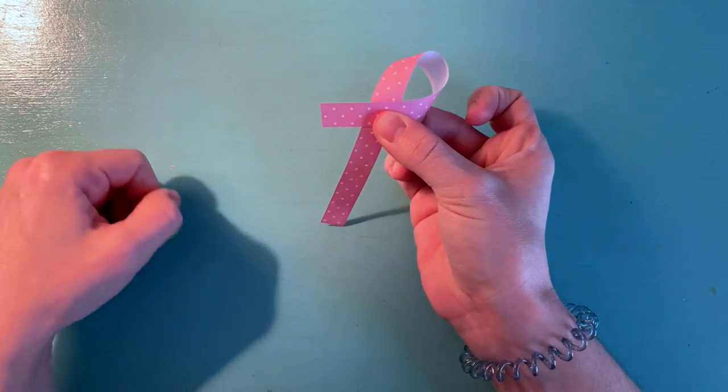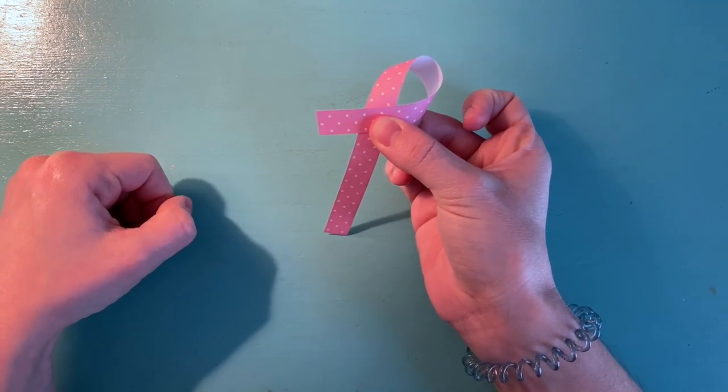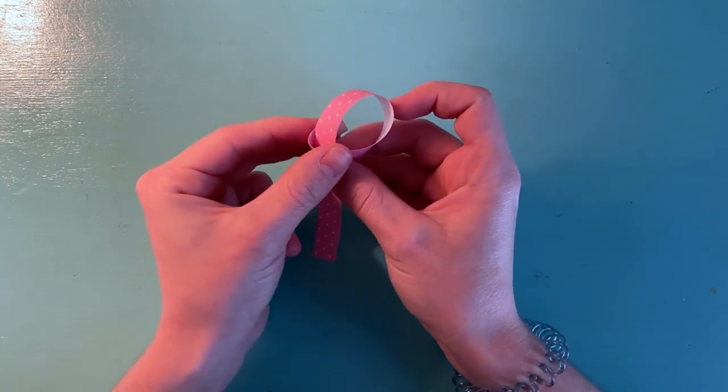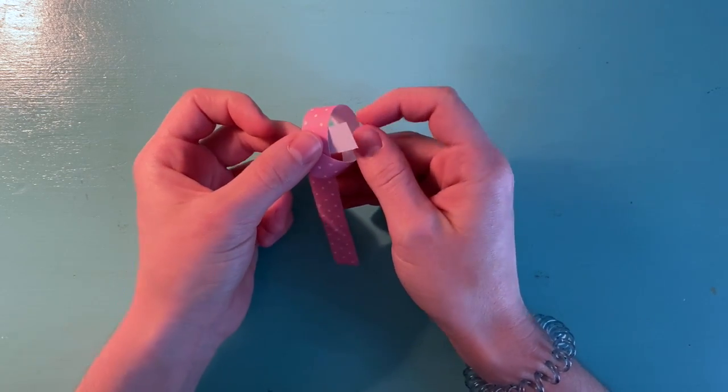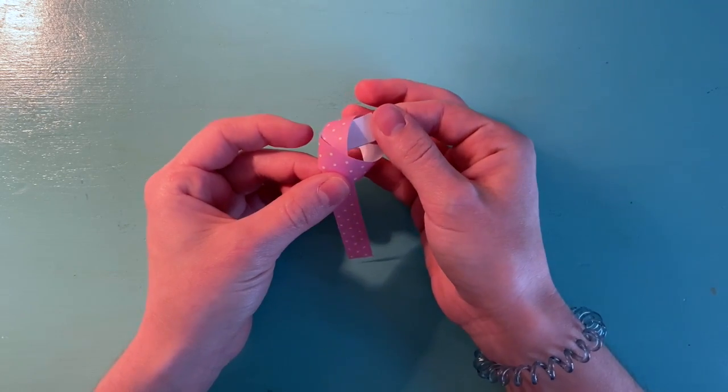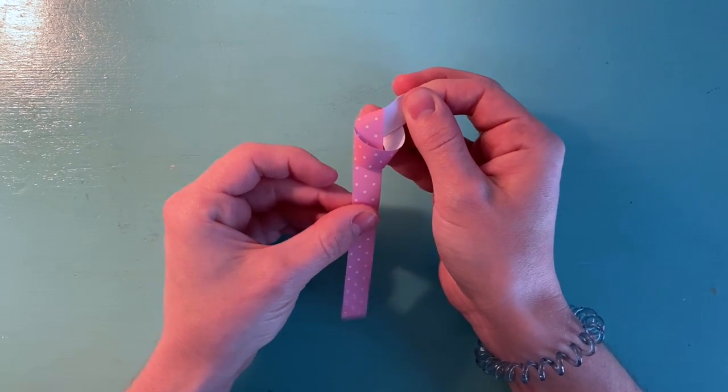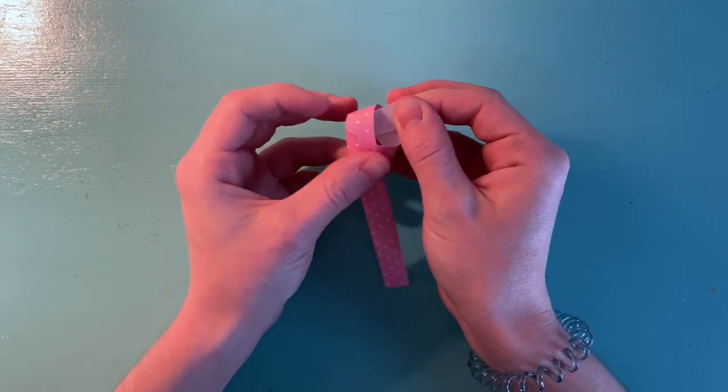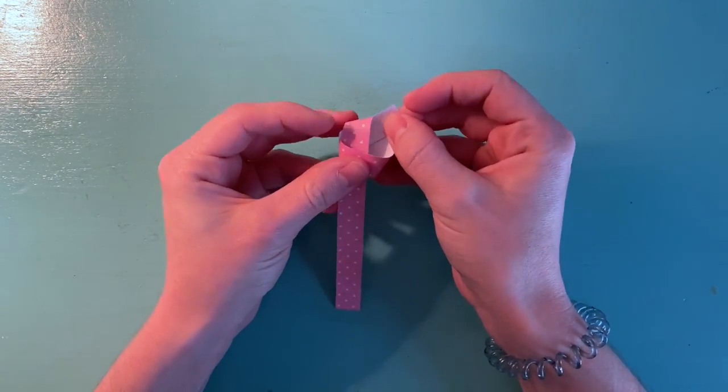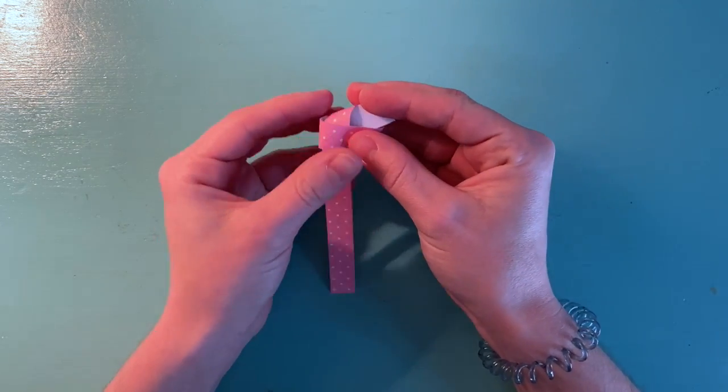Next, you're going to take that strip and fold it over, making it look sort of like a ribbon. Then you're going to take that little end that you started with and tuck it in and pull. Don't pull too tightly. We're just trying to get our edges all aligned and get nice, seamless points.